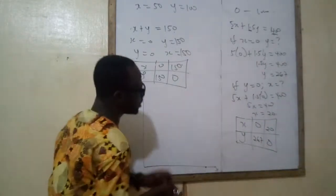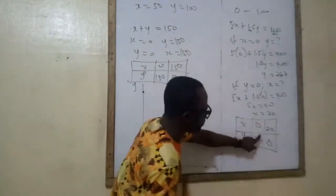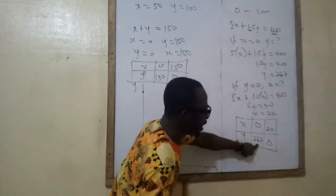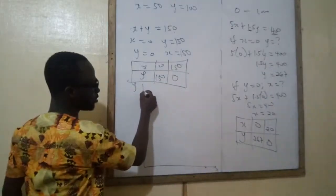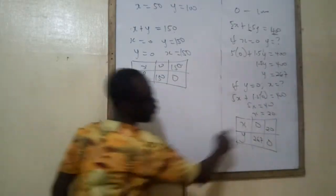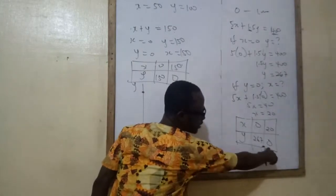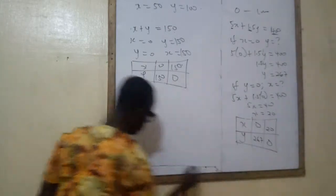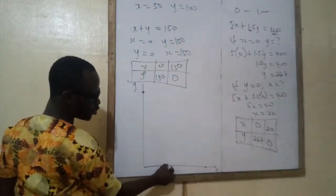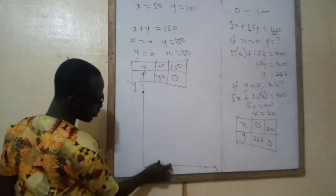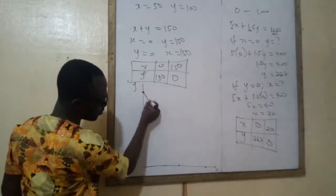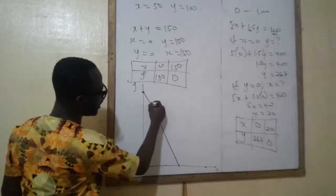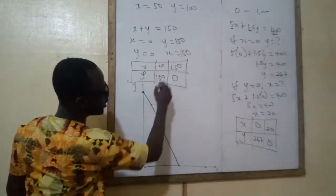So let's plot. If we are plotting, we go here. When x is 0, y is what? That is here. When x is 20, y is 0 — that could be somewhere in here. X is 20, y is 0. So this is the first equation.